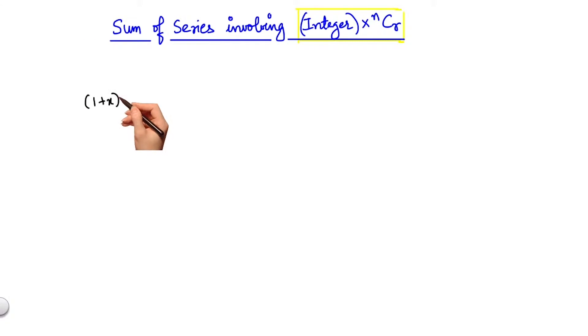We have already seen the expansion of (1+x)^n. In this expansion, if I put x equals 1, we get c0 plus c1 plus c2 until cn equals 2^n. That is, summation of cr where r varies from 0 to n is equal to 2^n.